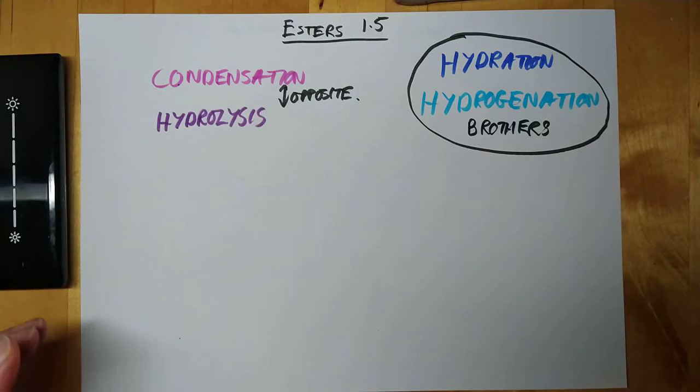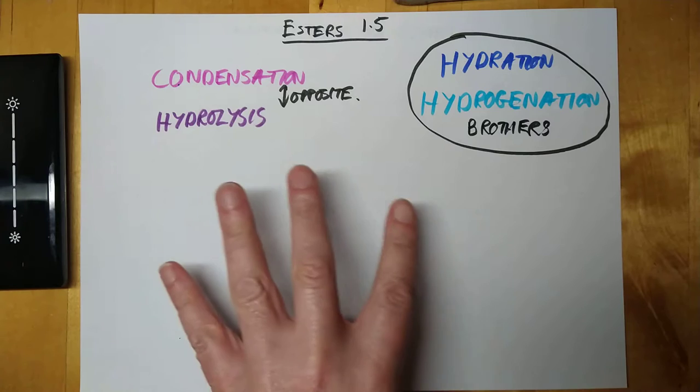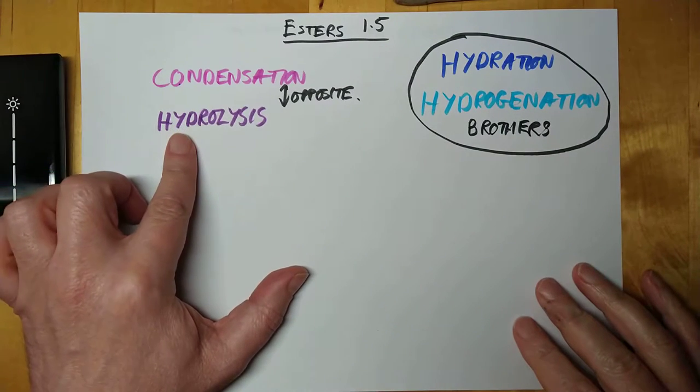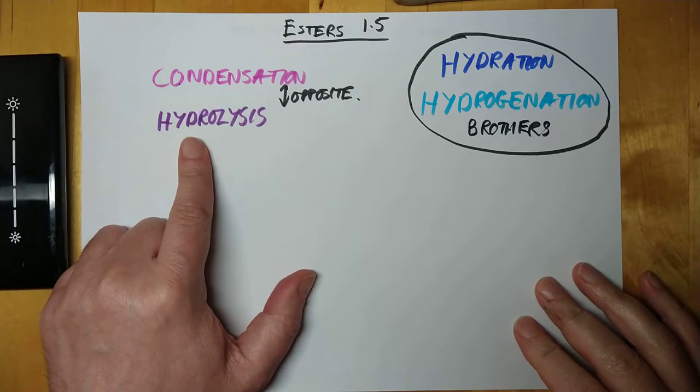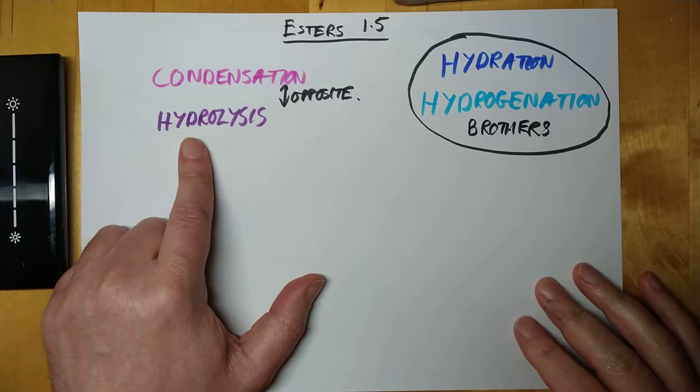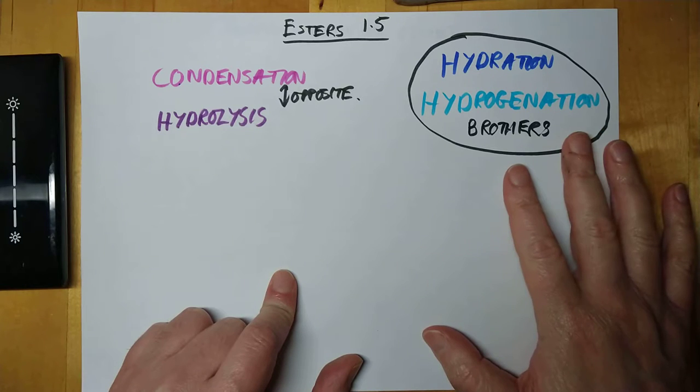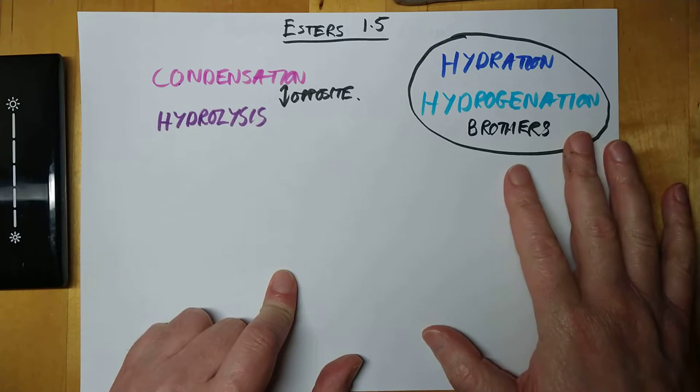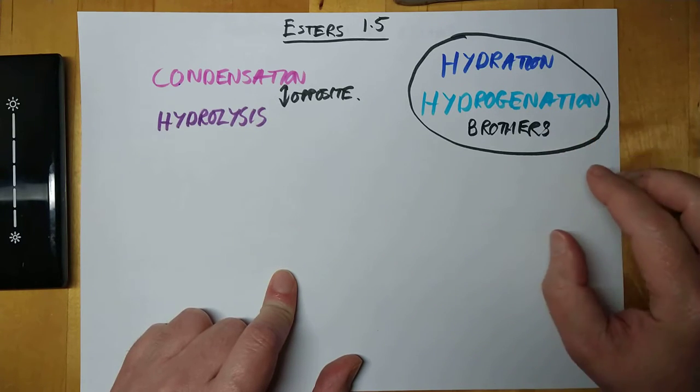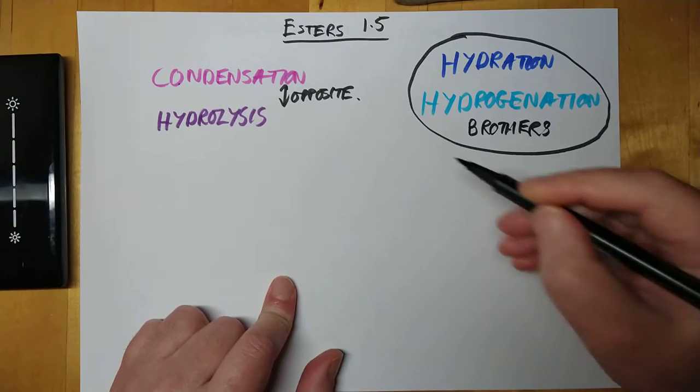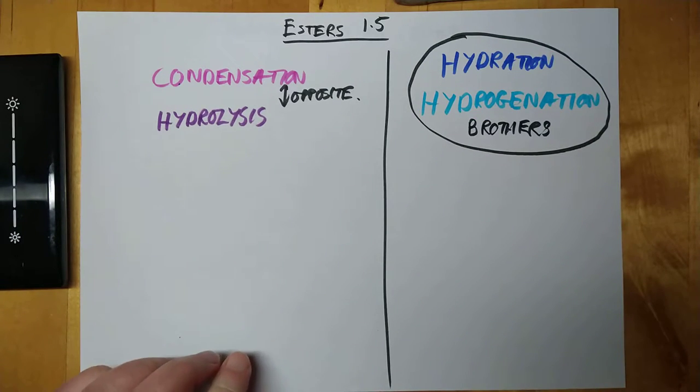And we're going to have a look at how both of these sets of terms work tonight. I think I'll start with these two, because these two are very much related to making and breaking esters. These two were actually hangovers from National 5, but you're still expected to be aware of how they work. So let's start with condensation and hydrolysis.